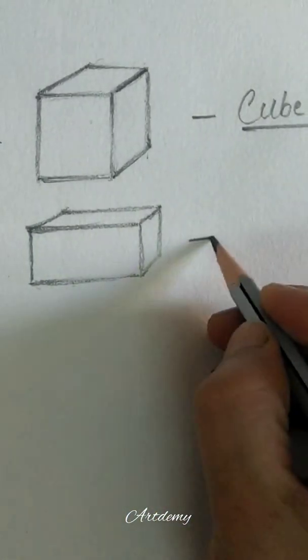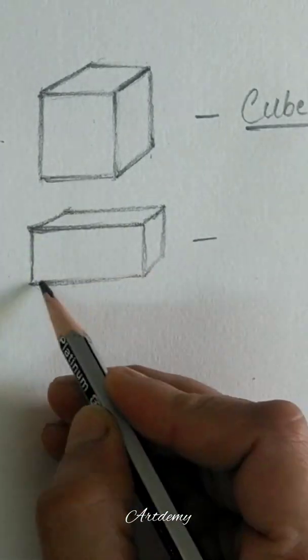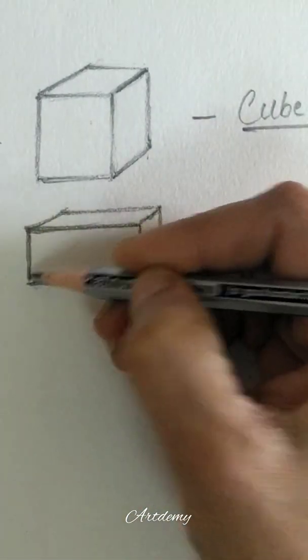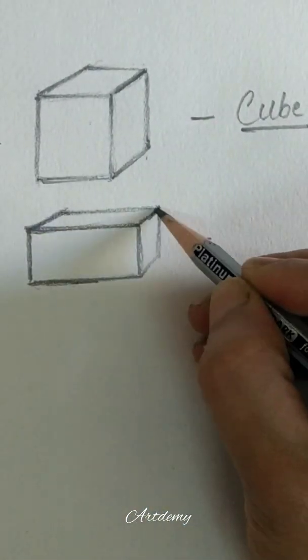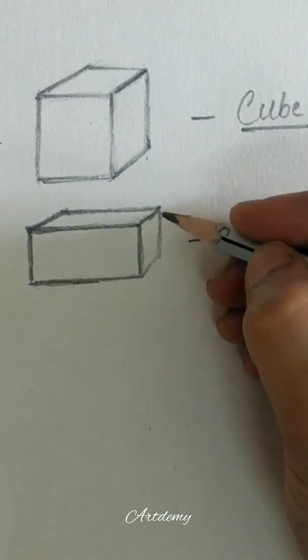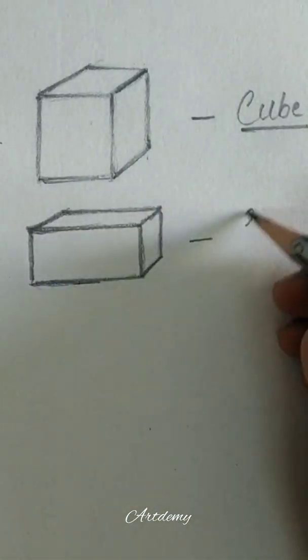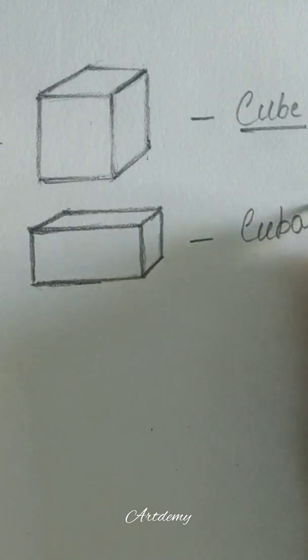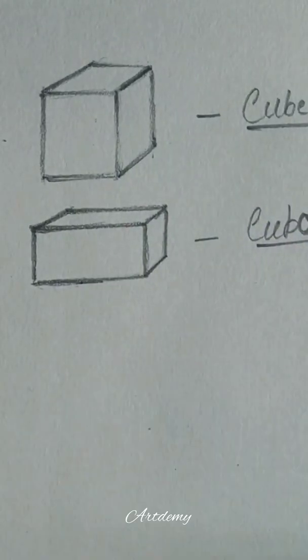We have to erase the extra lines and this is a perfect cuboid. Generally children make mistakes in doing this, so follow the steps properly and this is our cuboid.